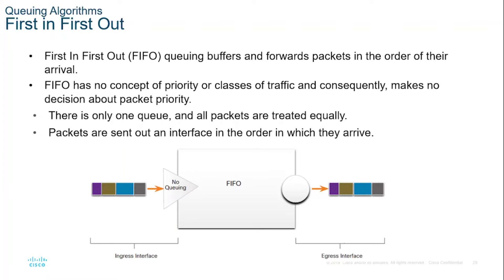When no other queuing strategies are configured, all interfaces except serial interfaces at E1 or 2.048 Mbps and below use FIFO by default. The serial interface at E1 and below uses WFQ by default. So if the technology is E1 with 2.048 Mbps, the default algorithm used is WFQ, or Weighted Fair Queuing.